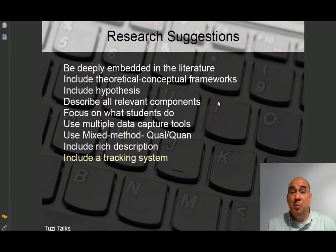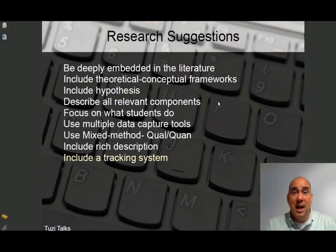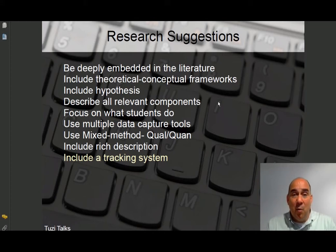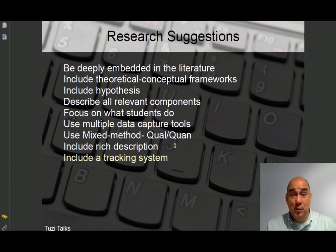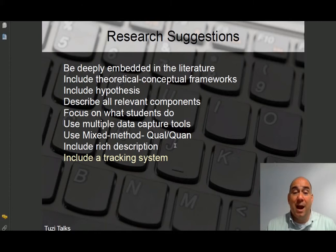They suggest using multiple modes of capturing data — both qualitative and quantitative. You want to triangulate your data collection, as Miles and Mitchell would say, so you can more appropriately certify the conclusions you're reaching. You should try to include a rich description, which will be more qualitative. If possible, try to include a tracking system. There are applications that capture eye movements — whether someone goes forward and backward while reading. Most researchers won't have access to that type of software, but the more you can capture, the more interesting your data will be and the better your conclusions.